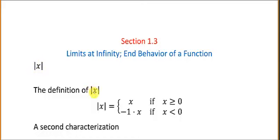The definition of the absolute value of x is that it's defined by the piecewise function: x, if x is greater than or equal to 0, or negative 1 times x, if x is less than 0. A lot of books would just say the opposite of x, but students have a better understanding if you say negative 1 times x, even though it means the same thing.